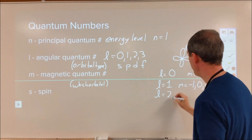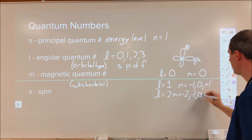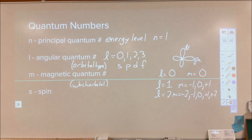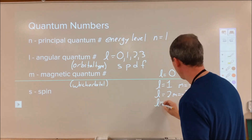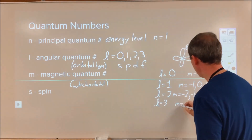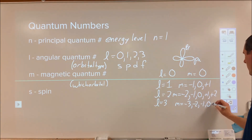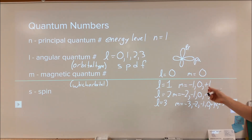For the magnetic quantum numbers: for an S orbital (L=0), M can only be zero — there's only one S orbital. For a P orbital, M can be negative one, zero, or positive one, representing the Px, Py, or Pz orbital. For D orbitals there are five different orbitals per energy level, so M ranges from negative two to positive two — DXY, DZ squared, and so on. For F orbitals (L=3), M goes from negative three to positive three.